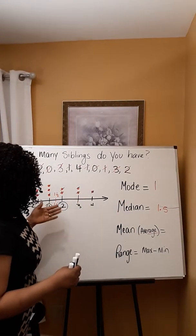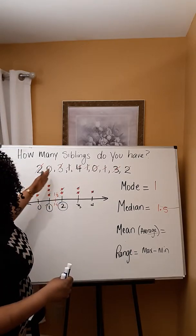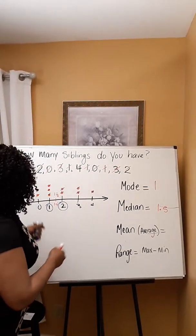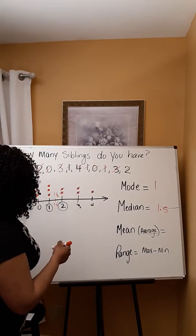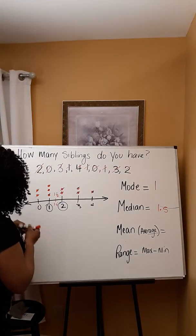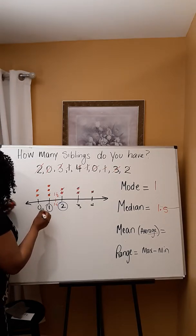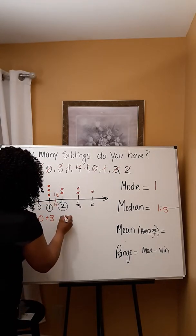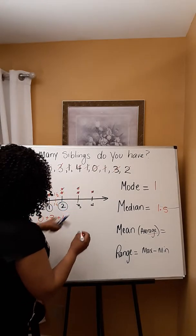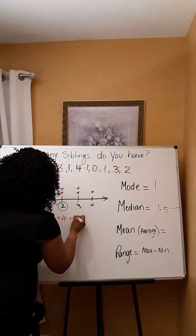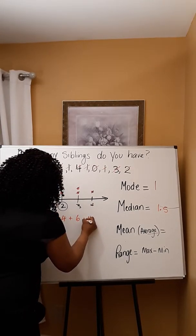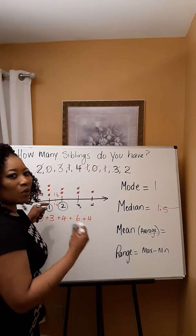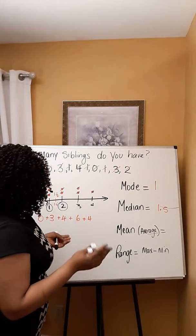To find the mean for this set of data using the dot plot, we multiply each value by its frequency: 2 times 0 equals 0; 3 times 1 equals 3; 2 times 2 equals 4; 2 times 3 equals 6; and 1 times 4 equals 4. This is a quick way because these numbers occur multiple times, so there's no need to add them one by one. Adding up: 6 plus 4 is 10, and 10 plus 7 is 17.